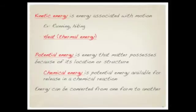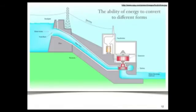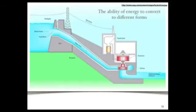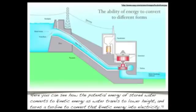Energy can be converted from one form to another, just like the rubber band example. Here's a picture of a dam — I've illuminated it in yellow. This dam is blocking up a bunch of water, just like the Hoover Dam near Nevada State College. You can see how the potential energy of stored water is converted into kinetic energy as water travels down to a lower height. That moving water turns a turbine and converts kinetic energy into electricity. This is how we get energy from the Hoover Dam.